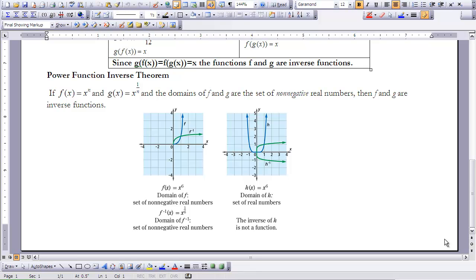So we're going to explore the power function inverse theorem. If f(x) = x^n, and g(x) = x^(1/n), and the domains of f and g are the set of non-negative real numbers, then f and g are inverse functions. So let's take a look at their graphs.